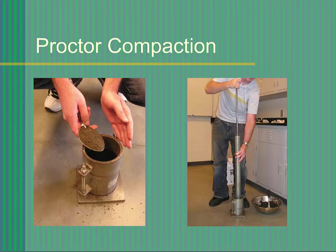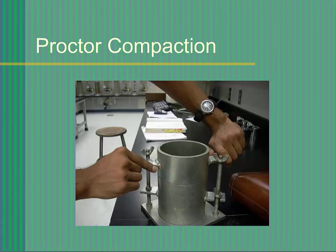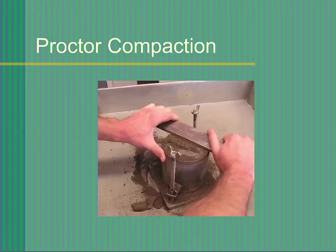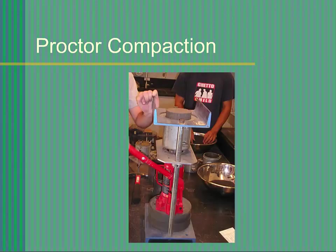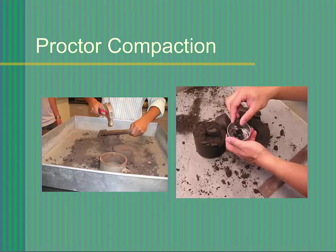When you have completed compacting the last layer, the compacted soil should be slightly above the joint between the mold and the collar. Carefully remove the collar with a twisting motion, then use the steel striking tool to trim excess soil from the top of the mold so it is flush with the top of the mold. Determine the combined weight of the Proctor mold with its base and the compacted soil inside. Remove the soil from the mold using the hydraulic sample extractor — be sure you have received instructions on its proper use before attempting to use this device. Break open the soil and obtain a representative sample from the center of the specimen for a moisture content test.